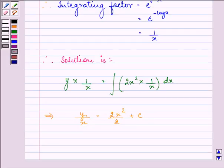Which is further equal to, y equals, multiplying x with all the terms in the right hand side, we have x³ plus cx.